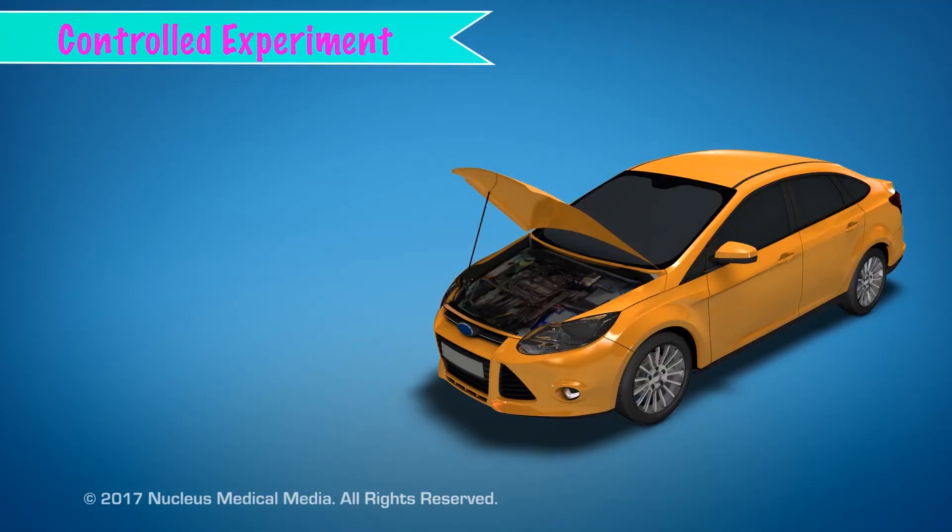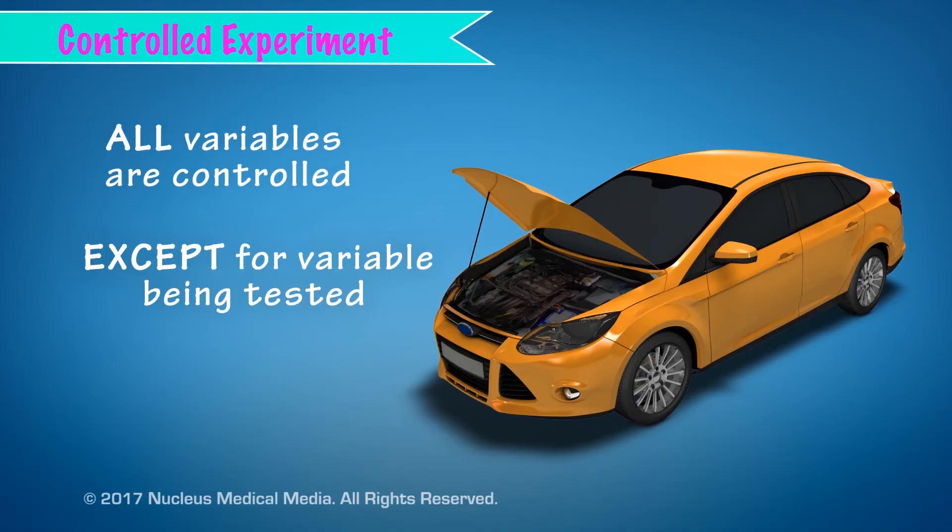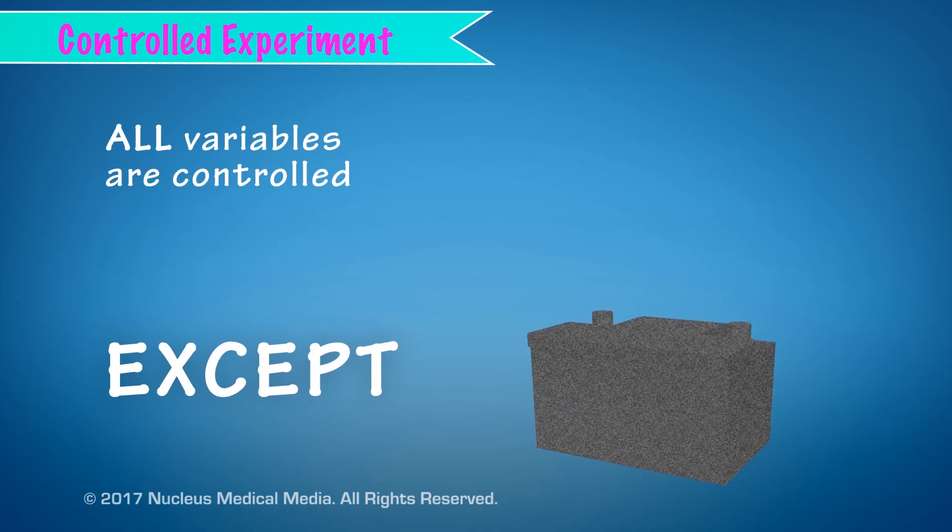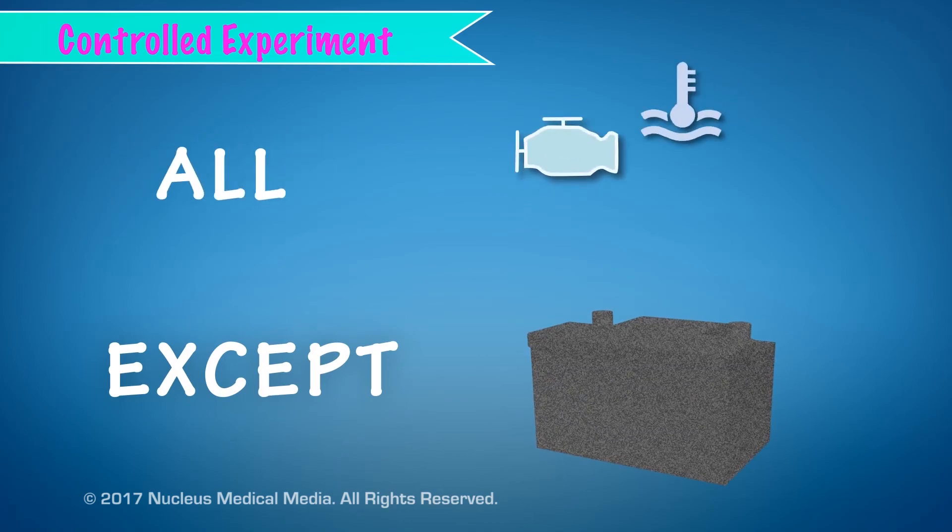During a controlled experiment, you control or keep constant all the factors known as variables, except for the one you want to test. In this experiment, the variable that changes is the battery, while all other possible variables that might prevent the car from starting are not manipulated or changed.